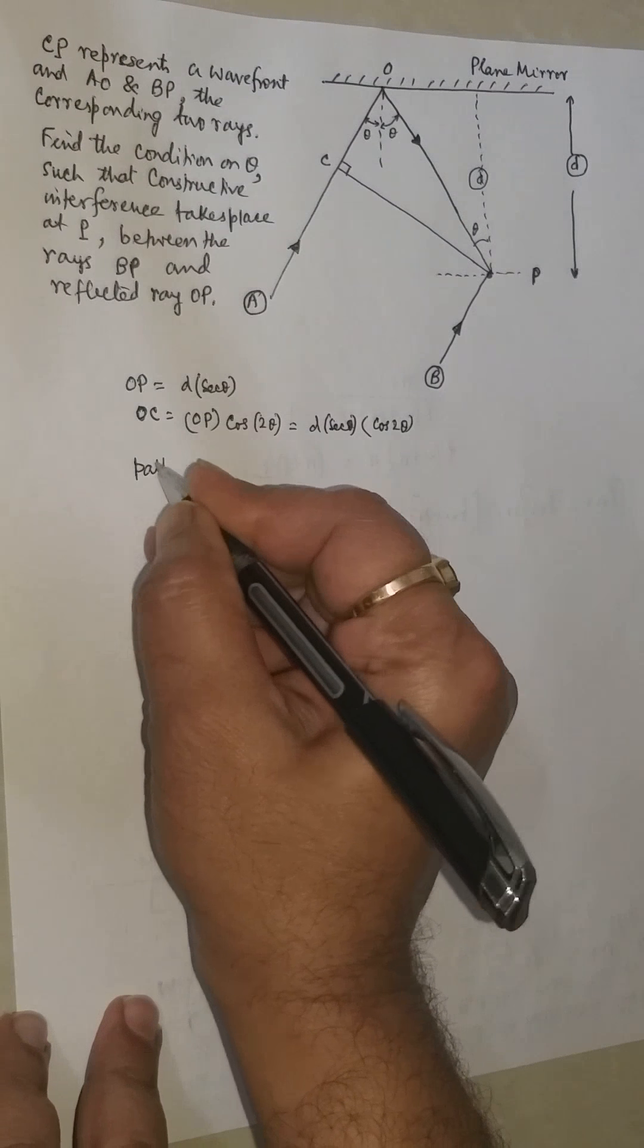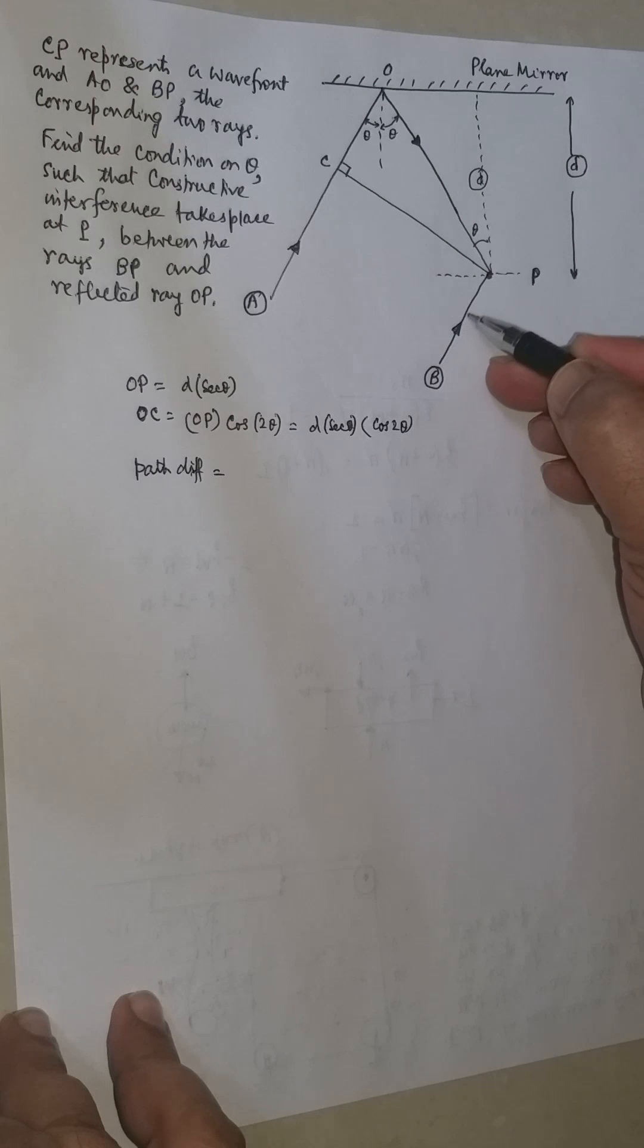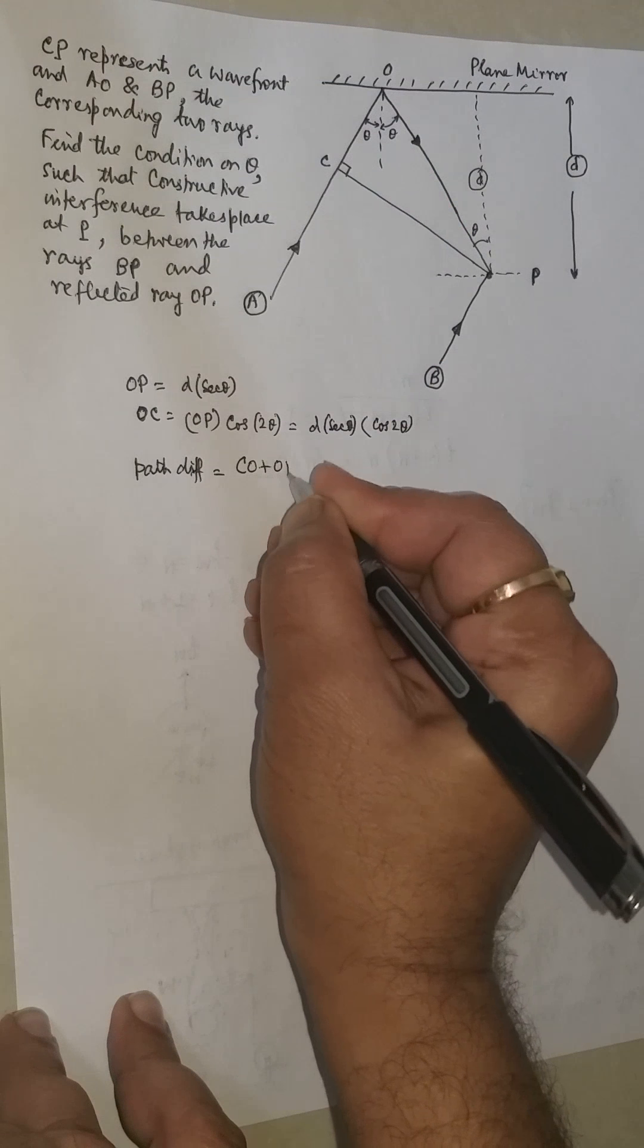Now what is the path difference? The path difference at point P, this ray is going straight forward, and the path difference starts from here. It is equal to CO plus OP.